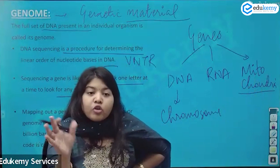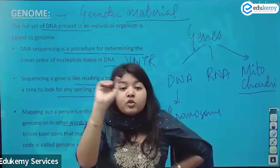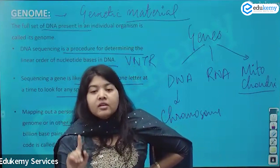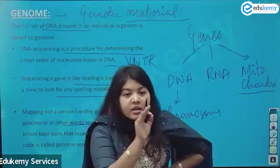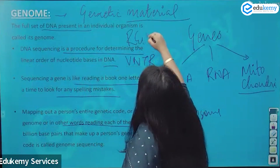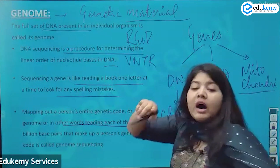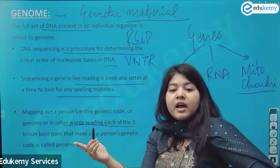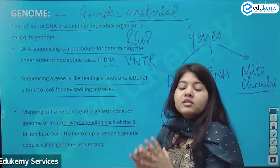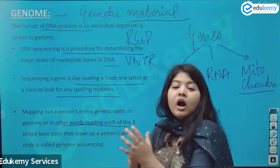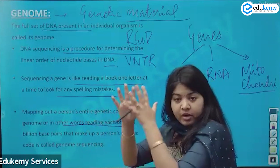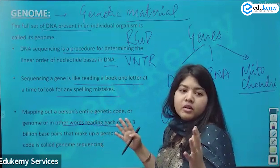Genome sequencing is not done for justice delivery — you do DNA sequencing for that. Genome sequencing is good for research and R&D, for example trying to understand how primitive tribes have evolved, trying to understand the population of India and how they have evolved, and trying to understand the immunity of a region for a long-term research process.